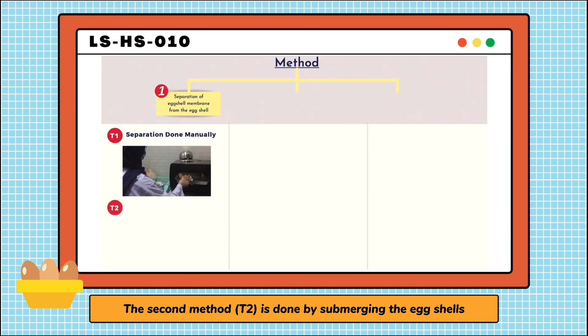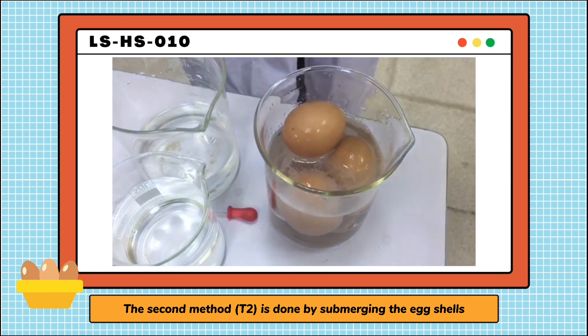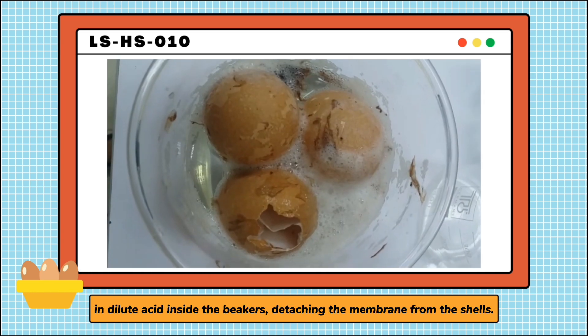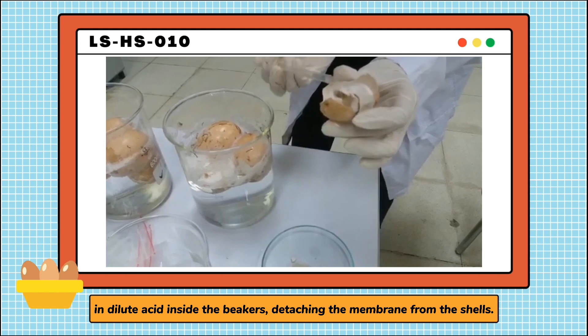The second method, T2, is done by submerging the eggshells in dilute acid inside the beakers, detaching the membrane from the shells.